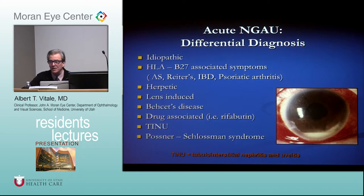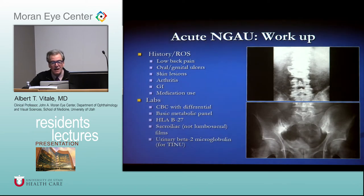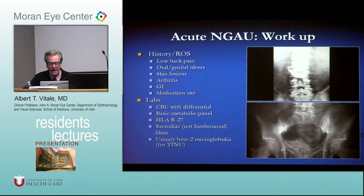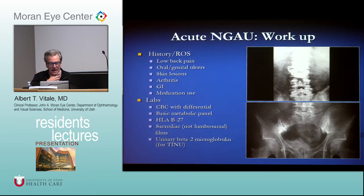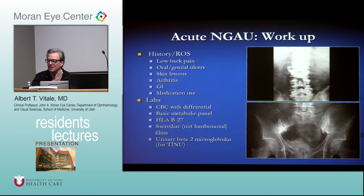TINU stands for tubulointerstitial nephritis and uveitis syndrome. The important things to elicit on history include lower back pain, oral genital ulcers, skin lesions, arthritis, GI symptoms, and medication use. Labs to consider include syphilis serology, HLA-B27 — probably the most important — plus a CBC and basic metabolic profile.